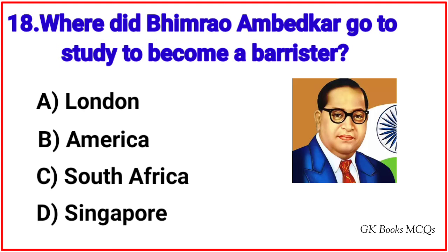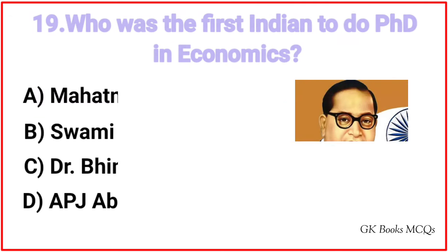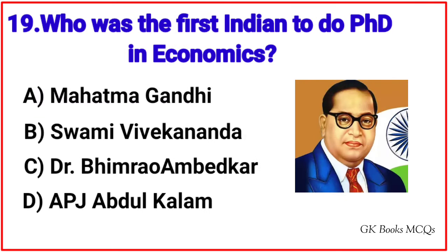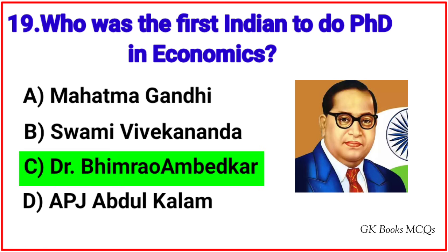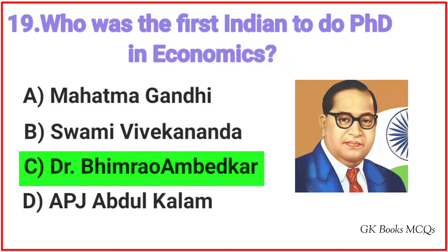Question number 18: where did Bhimrav Ambedkar go to study to become a barrister? Correct answer is option A, London. Question number 19: who was the first Indian to do Ph.D. in Economics? Correct answer is option C, Dr. Bhimrav Ambedkar.